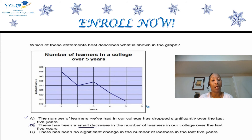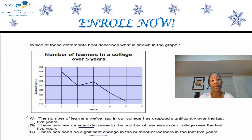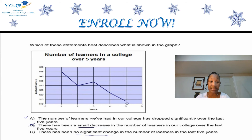Then we look at Option C: there has been no significant change in the number of learners in the last five years. Would we say there has been no significant change? Is that a true statement? According to our graph, a decrease from 545 to 513 in enrollment is not what we would consider no significant change. So we know that Option C will not work.